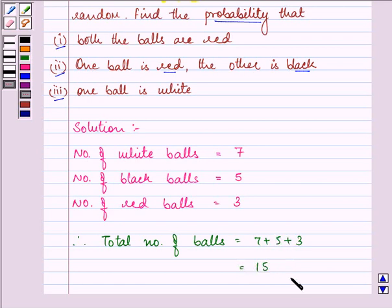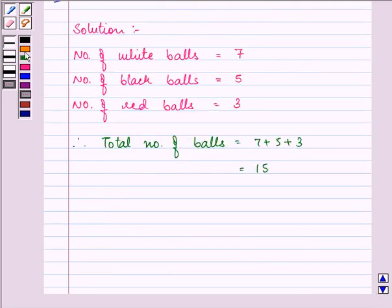Now, with the help of this information, we will be finding out the probability of these 3. Now, firstly, we need to find out the probability that both the balls are red.